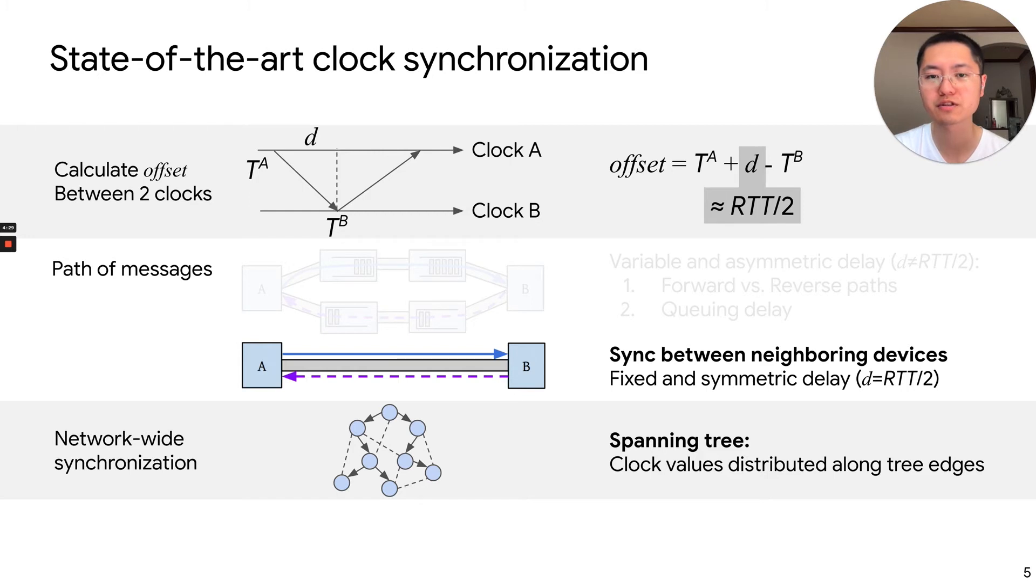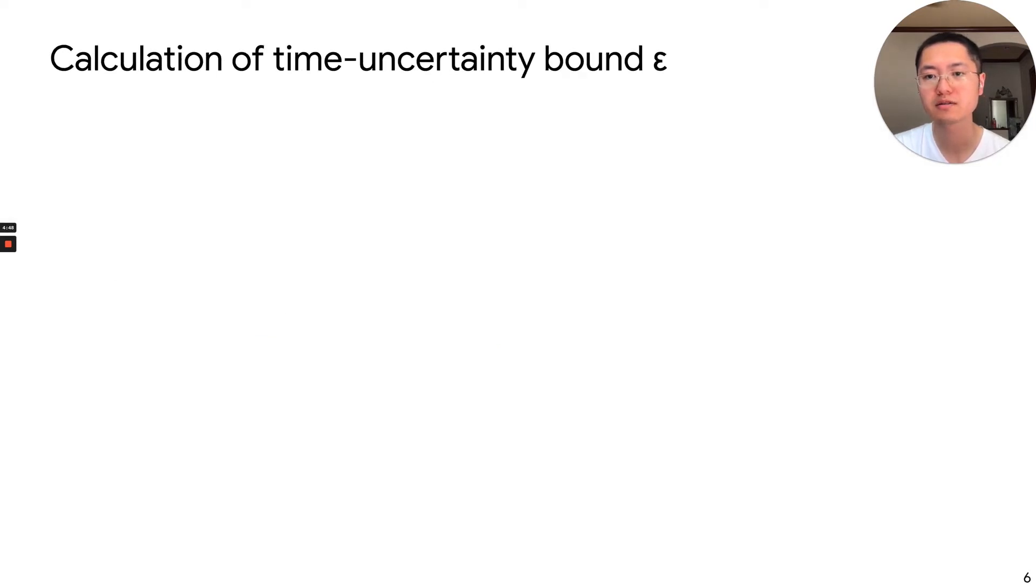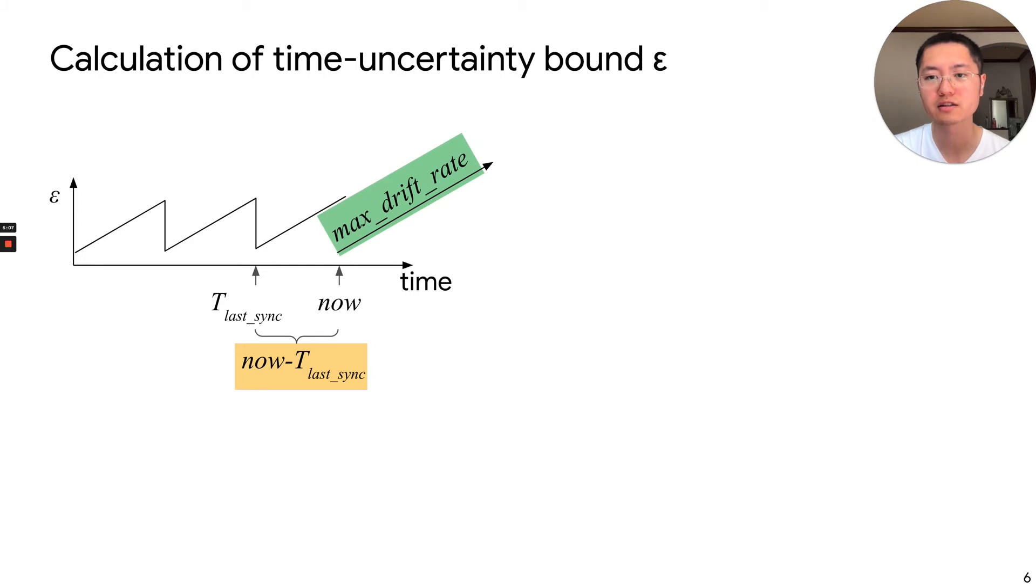Finally, we cannot just do this once, because clocks can drift apart over time. This is because they are driven by oscillators, and the frequency of oscillators can change over time. So we have to periodically synchronize the clocks. Therefore, the time uncertainty bound is also a periodic function. When we read at the time now, the value of a time uncertainty bound depends on two factors. The first factor is how long it has been since the last time it got synchronized. And the second factor is how fast the clocks can drift away. We will show that both factors can be very large because of failures.